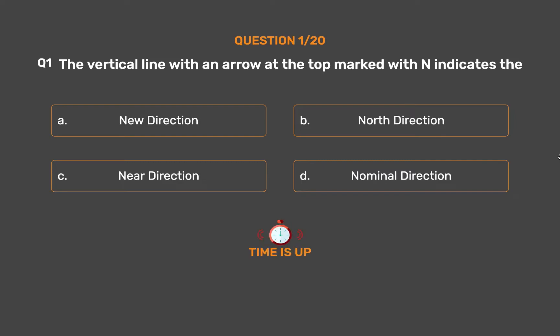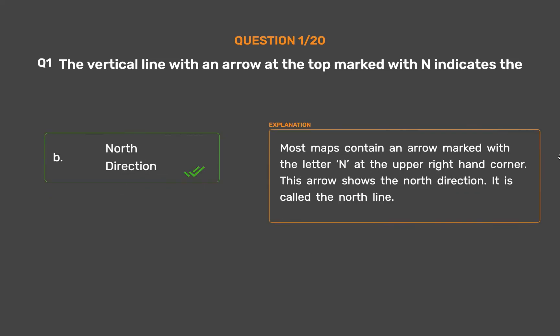The correct answer is Option B: North direction. Most maps contain an arrow marked with a letter N at the upper right-hand corner. This arrow shows the north direction. It is called the north line.